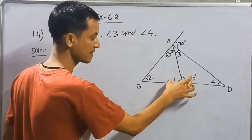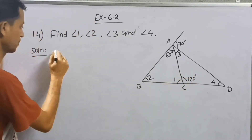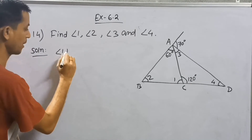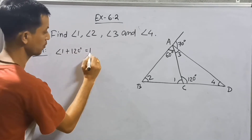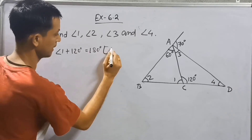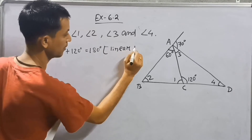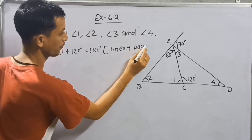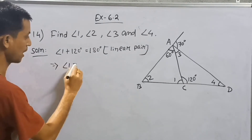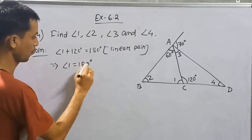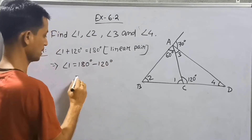Two adjacent angles are supplementary and they form a linear pair. So Angle 1 plus 120 degrees is equal to 180 degrees — linear pair. Therefore, Angle 1 is equal to 180 degrees minus 120 degrees, which is 60 degrees.